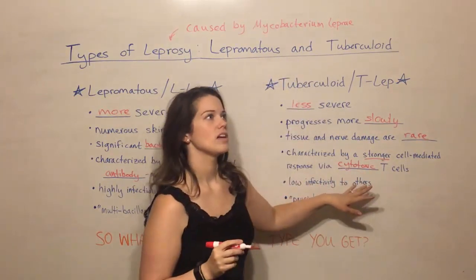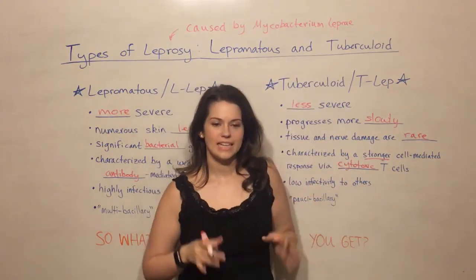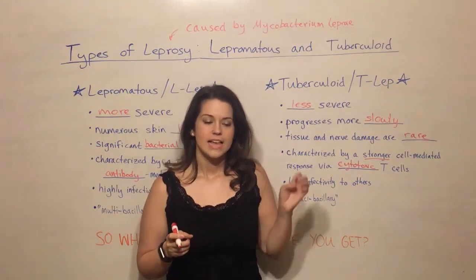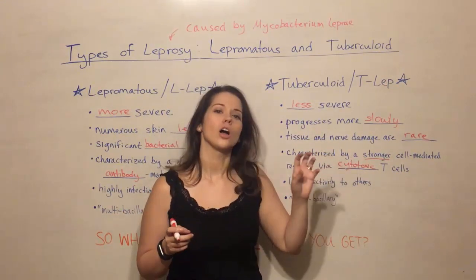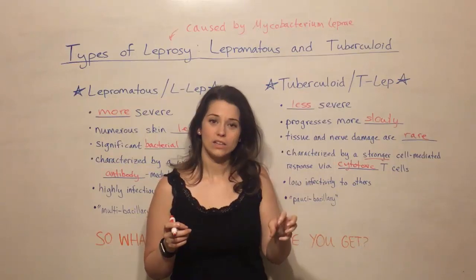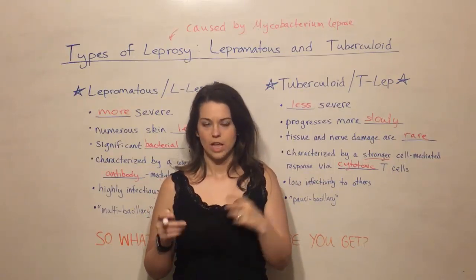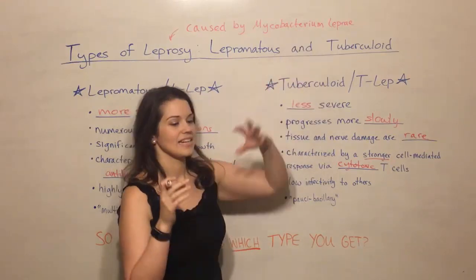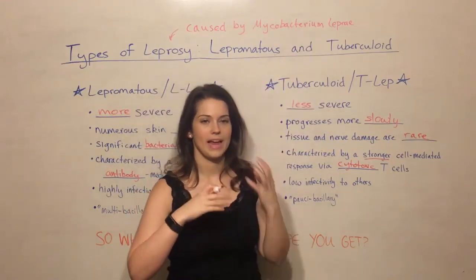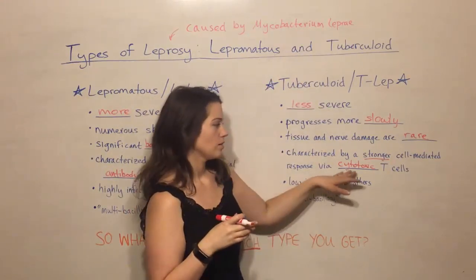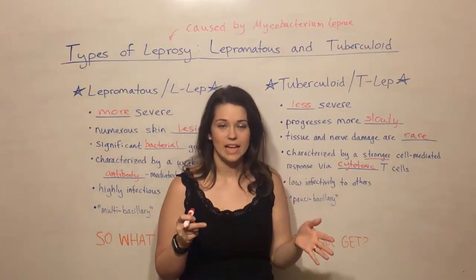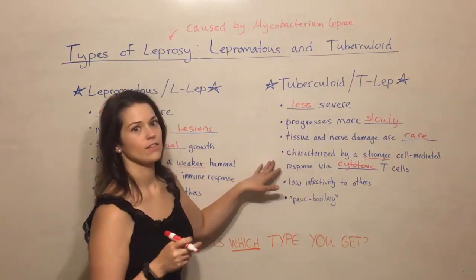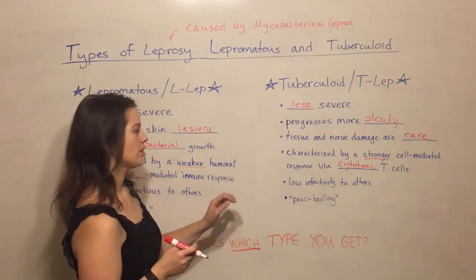Cytotoxic T cells, also known as CD8 T cells or killer T cells, are cells that will actually kill infected cells. So as Mycobacterium leprae is replicating inside a cell, cytotoxic T cells can come along and kill that cell, stopping the replication process. That's why this is a much more effective immune response against this particular pathogen.